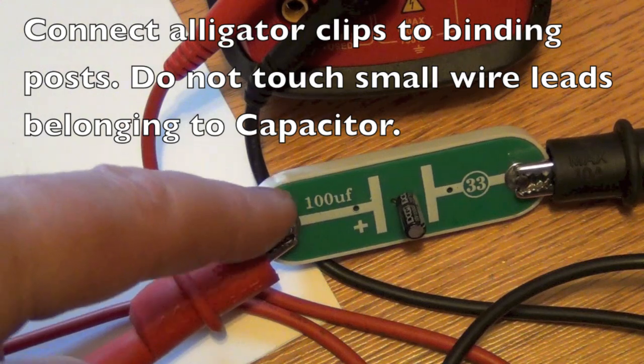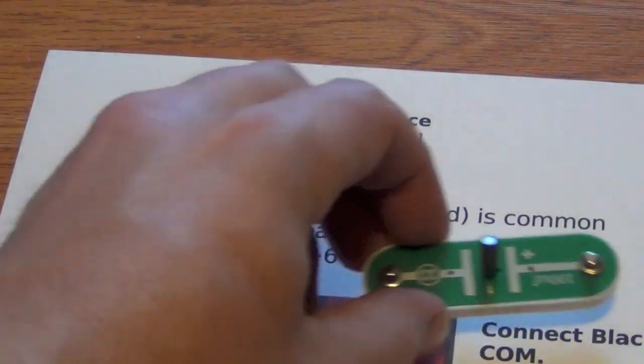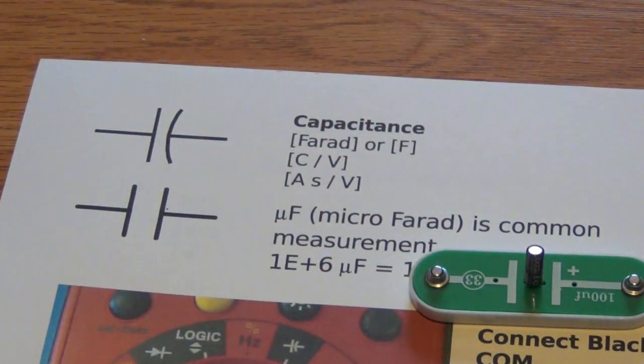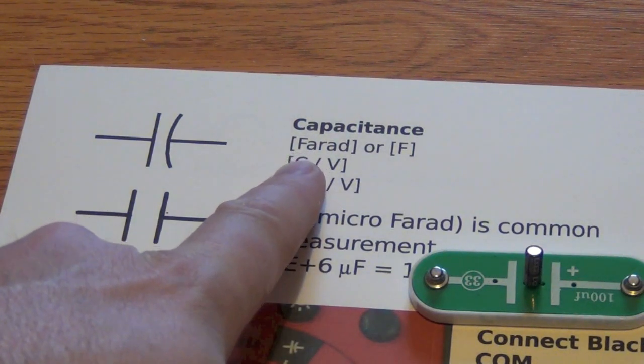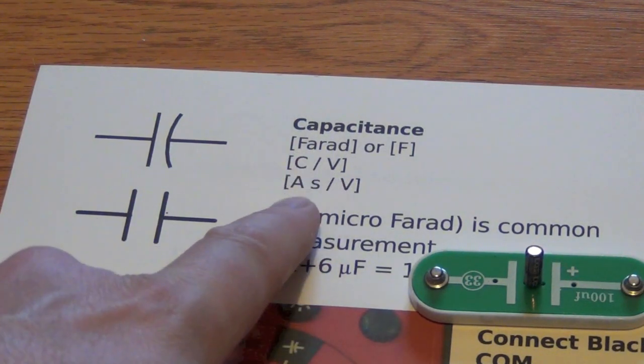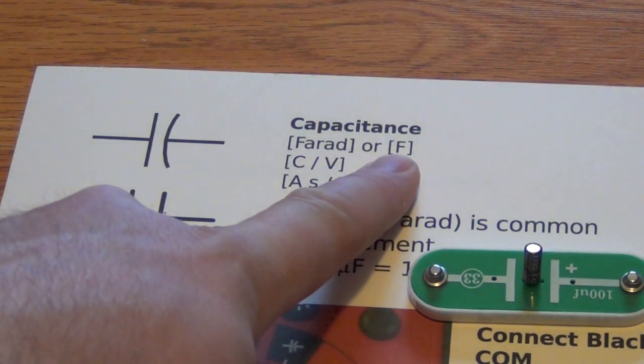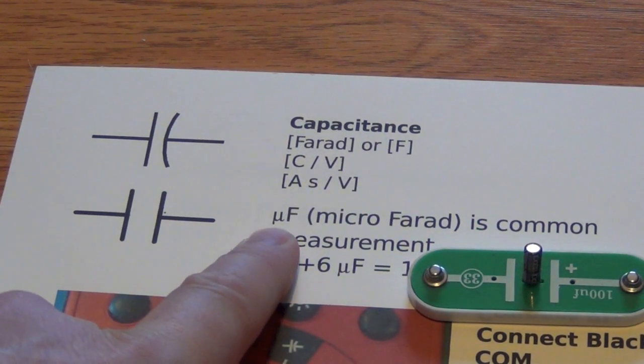When we look at a capacitor, it has a property called capacitance, and that's measured in either farads, or we could call it a coulomb per volt or an amp second per volt. We just use the capital letter F. It is most common though to find microfarads in our laboratory.